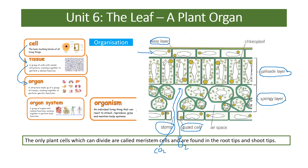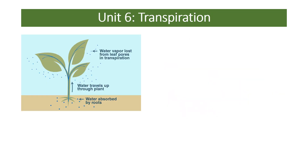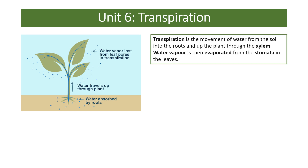There is a type of cell found at the tips of shoots and roots called meristem cells. They are like the stem cells of plants — the only cells that can just divide and grow through cell division and mitosis.